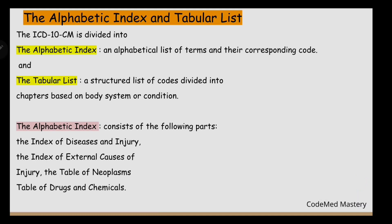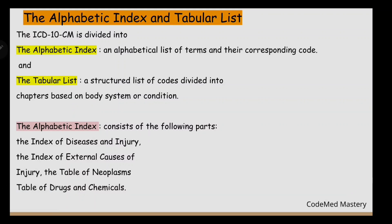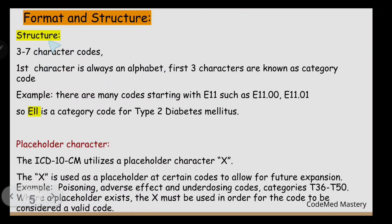The first convention is the Alphabetic Index and Tabular List. ICD-10-CM is divided into the Alphabetic Index and the Tabular List. The Alphabetic Index contains an alphabetical list of terms and their corresponding codes. The Tabular List is a structured list of codes divided into chapters based on body systems and conditions. The Alphabetic Index also includes the Index of Diseases and Injury, Index of External Causes of Injury, Table of Neoplasms, and Table of Drugs and Chemicals.